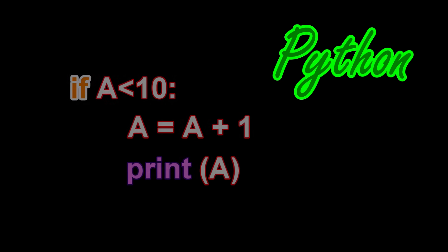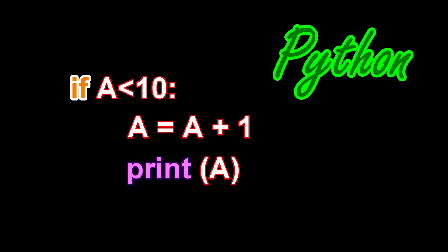Here is how an if statement looks in Python. Here, if the value of the variable a is less than 10, the statements inside the if statement will be executed. But if the value of the variable a is not less than 10, then the statements inside the if statement will be skipped.